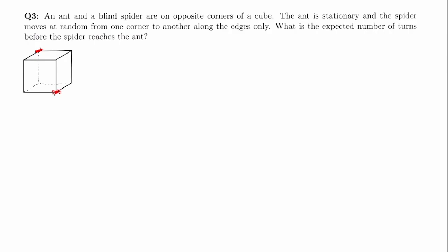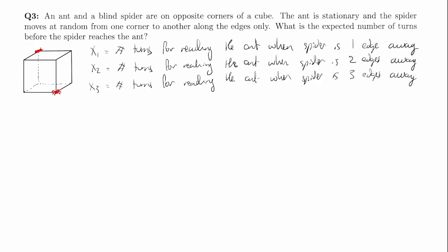So let's define three different variables. We define x1, x2, and x3, and they represent the number of turns the spider has to take to reach the ant when the spider is one edge, two edges, and three edges away. What we're really looking for is the expected value of x3, since right now the spider is three edges away from the ant.